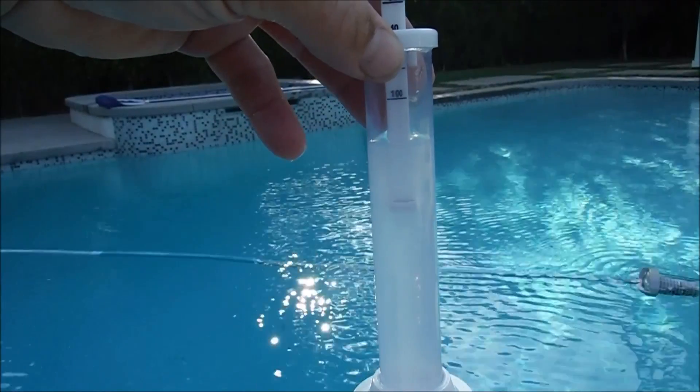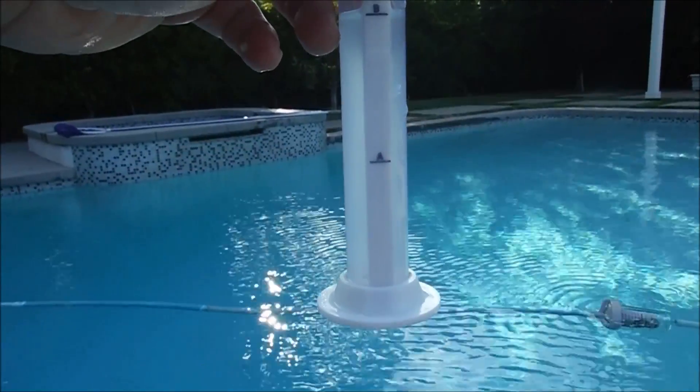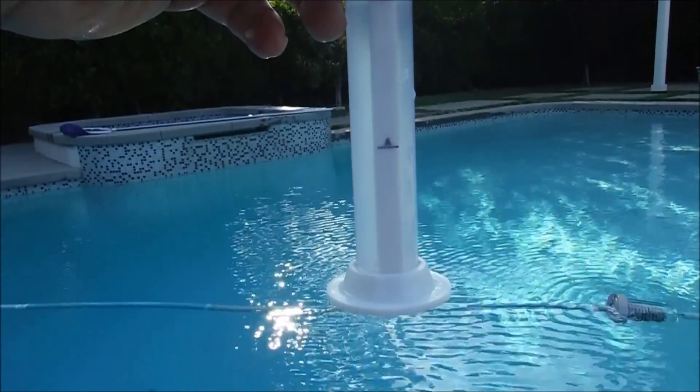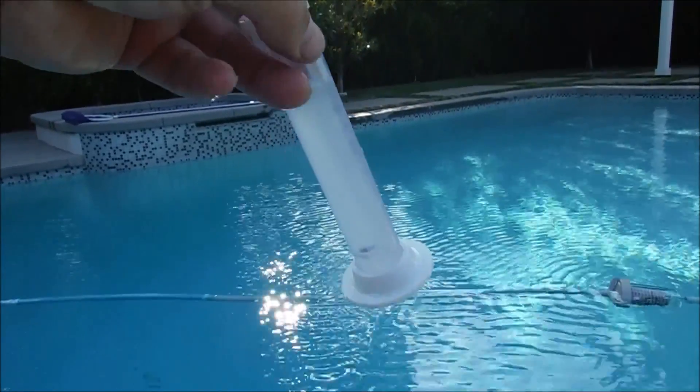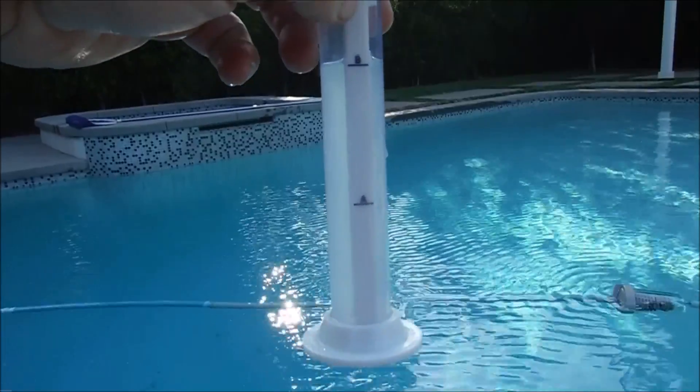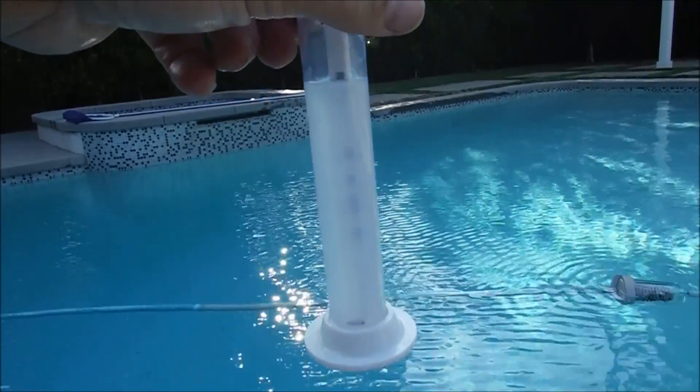And if you do that and it's still coming out below the 100 level mark that means that it's over 200 parts per million. In that case you're going to do a 1 to 2 ratio. One part pool water, two parts tap water and you're going to multiply the results by 3. If that's still coming out below the 100 mark on the tester, we're going to do one part pool water, four parts tap water and multiply the results by 5. And that will be your cyanuric acid level reading.